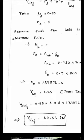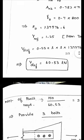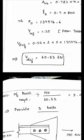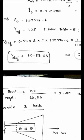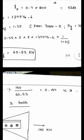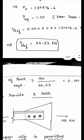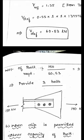We have calculated the strength of one bolt as 60.53 kN. The number of bolts required equals the given force divided by the slip resistance per bolt: 150 / 60.53 = 2.47. Rounding up, we provide 3 numbers of 8.8 grade bolts to resist the force of 150 kN. Part 1 of the problem is complete.